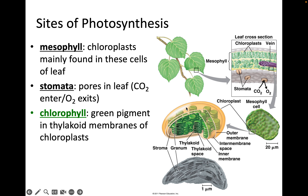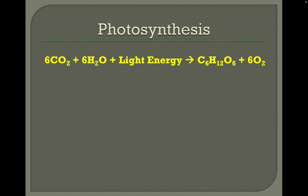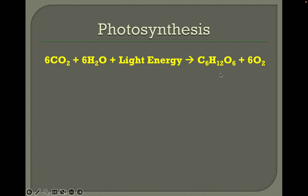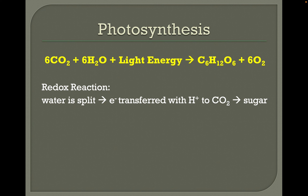Chloroplasts are mainly found in mesophyll cells of the leaf — the middle layer, especially towards the upper surface. Stomata are the pores in the leaf where CO₂ enters and oxygen exits; water vapor also exits through the stomata. Chlorophyll is the green pigment in the thylakoid membranes of the chloroplasts. Here's our basic summary equation for photosynthesis — you need to be able to reproduce this from memory. Six CO₂ gas molecules interact with six molecules of water and light energy from the sun, yielding a single molecule of glucose sugar and six oxygen gas molecules. It's a redox reaction where water is split, electrons are transferred along with H⁺ ions to CO₂ gas, creating the sugar.